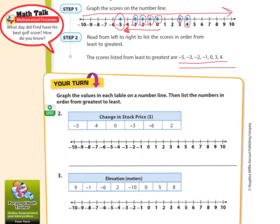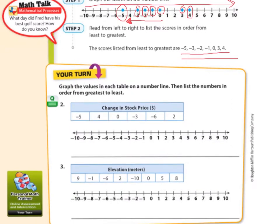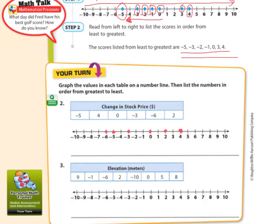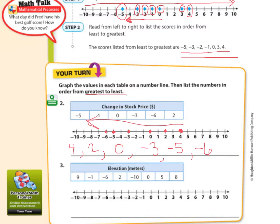Now let's graph these numbers and order them from greatest to least. My biggest number is 4, and then going left: 4, 2, 0, negative 3, negative 5, negative 6. You're probably wondering, am I supposed to be writing this down? If you think it's useful, write it down. But remember, the more information you have in your notes, the more information you have for a test.